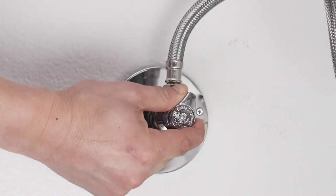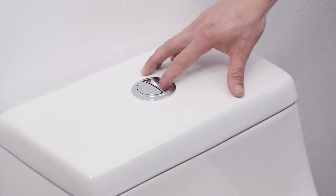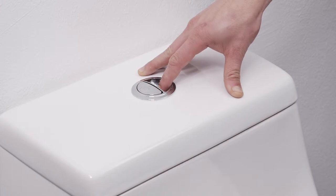Turn off the water supply at the shutoff valve at the wall to stop the flow of water. Flush your toilet and hold down the flush handle until the water is fully drained.